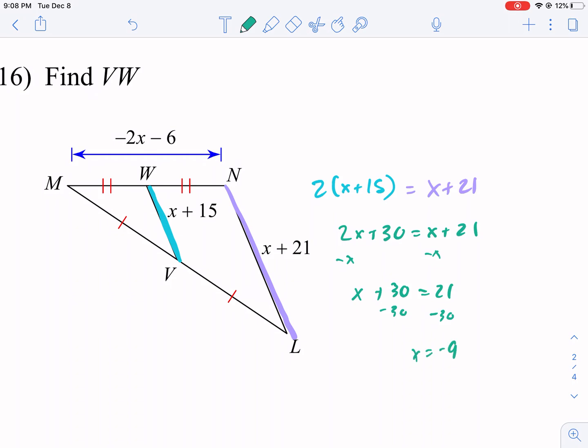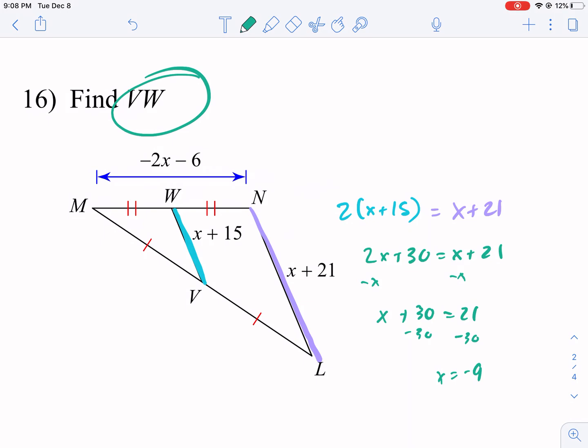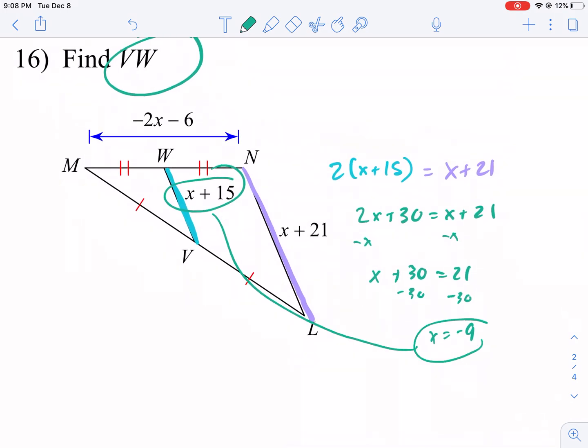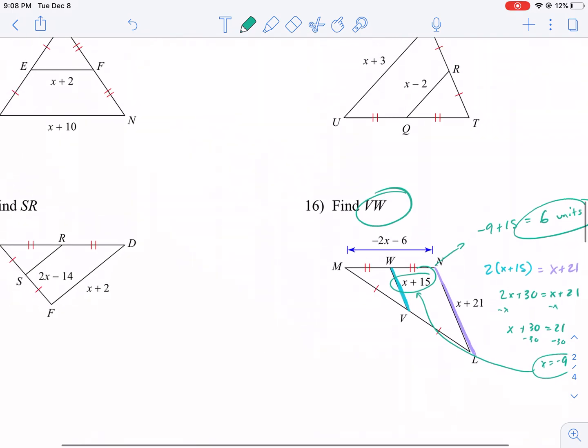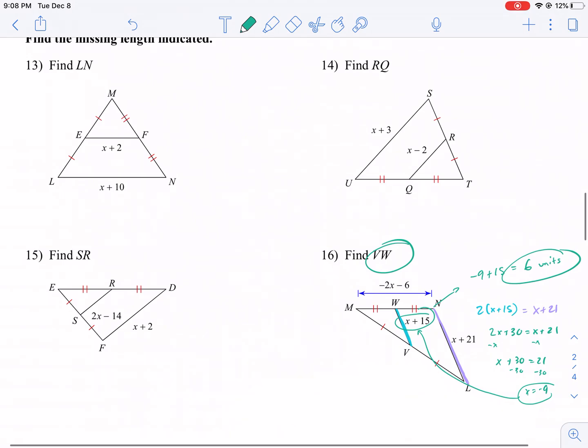This is not your answer because it's asking for VW. VW is this mid-segment. So we just need to plug this in here and then solve. So this is going to be negative nine plus 15. What do you know, we get six units. You're not going to get any negatives in this section because it has to be talking about a length. So just keep that in mind.